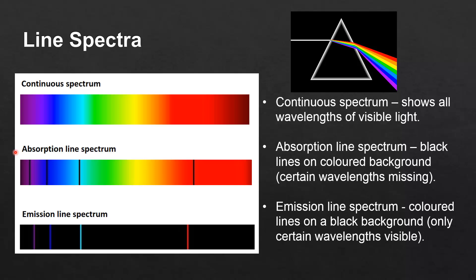An absorption line spectrum has black lines on a colored background. And an emission line spectrum has colored lines on a black background.